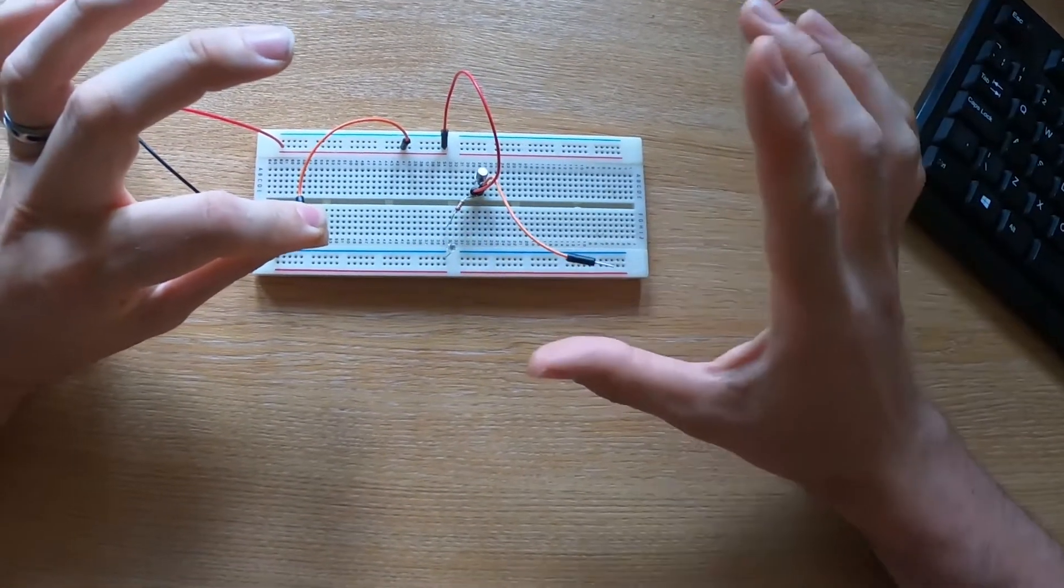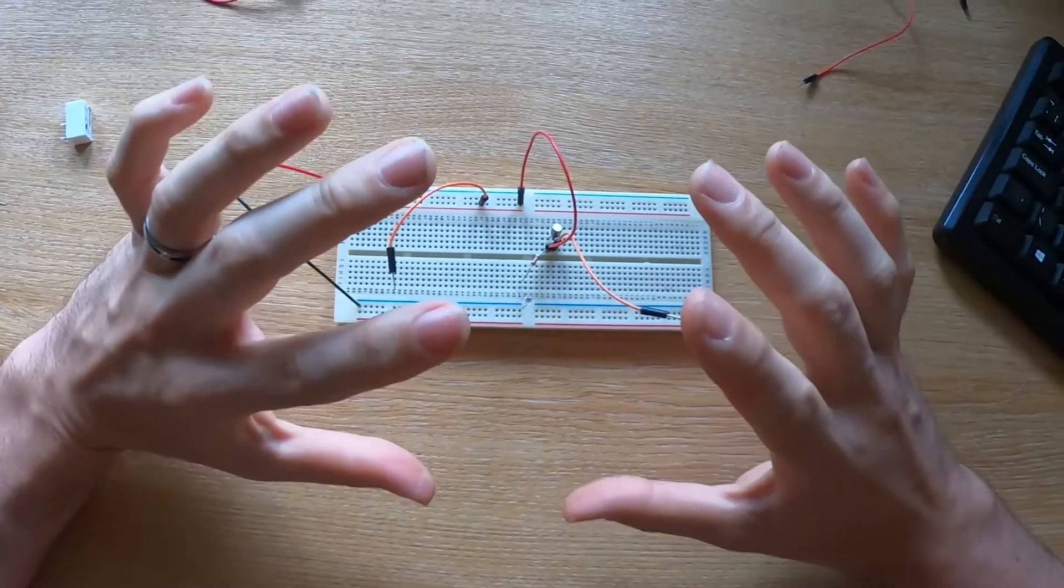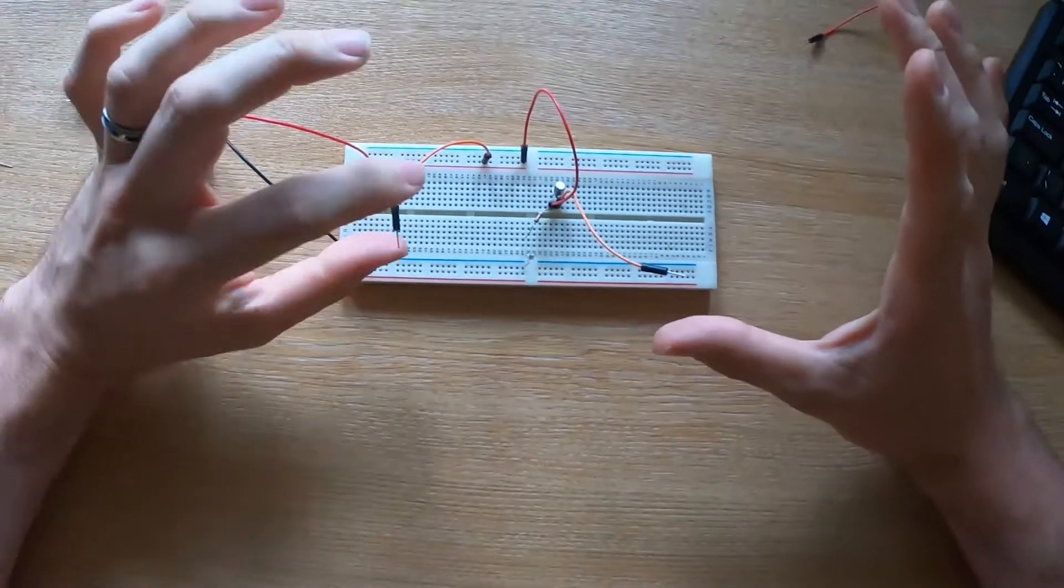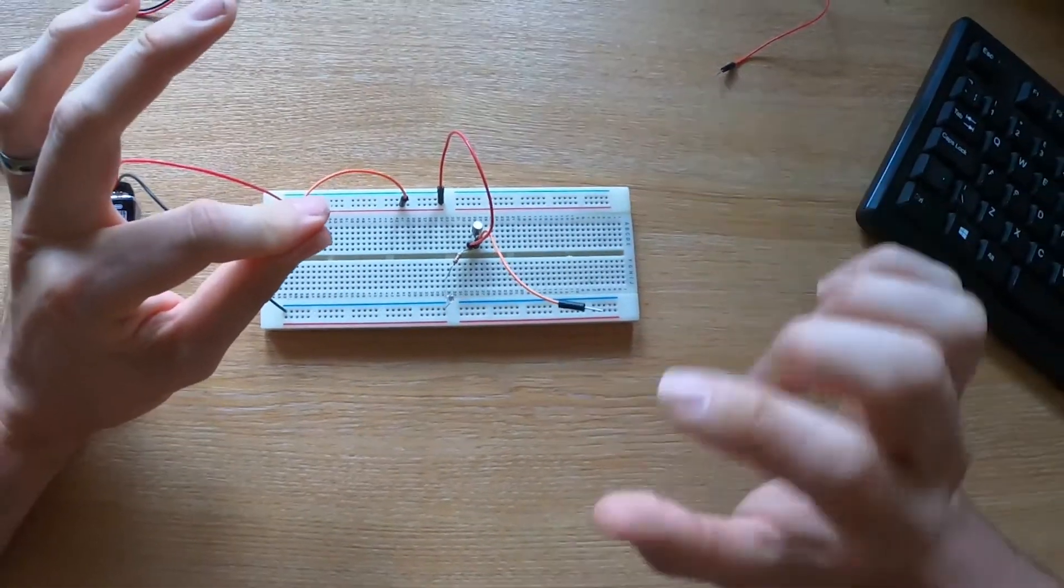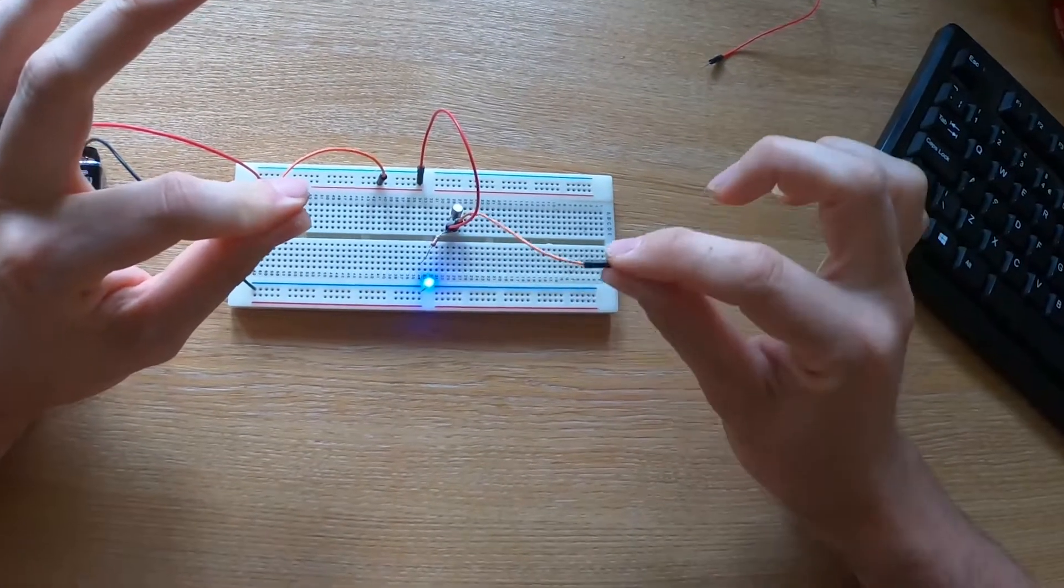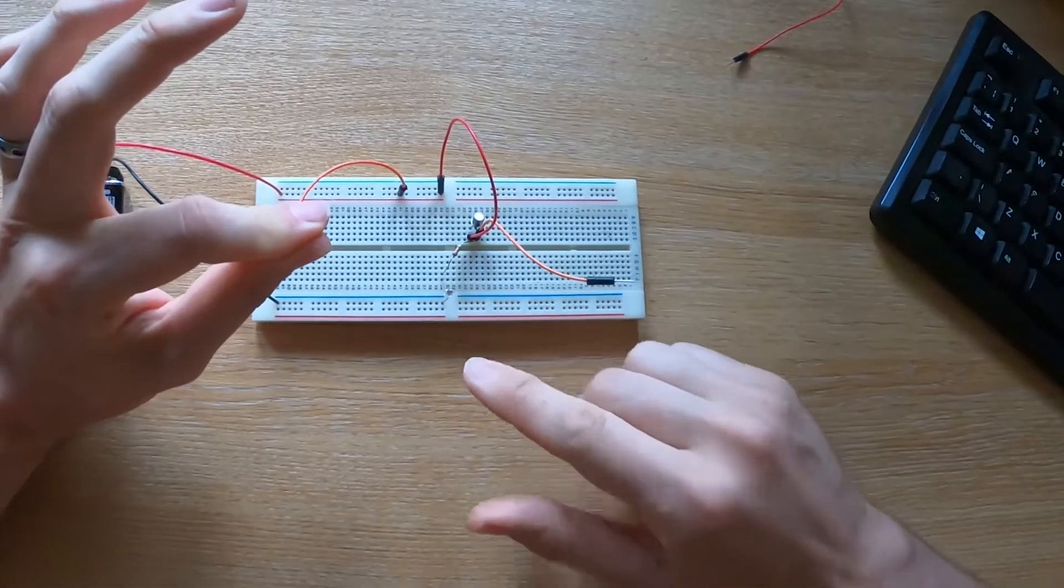Now what's cool about this circuit is you can get loads of people to hold hands, have one person on one end of the chain holding onto one wire, and somebody else on the other end of the chain holding the other wire, and the light will still come on.